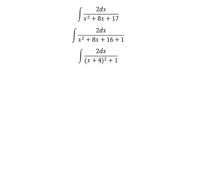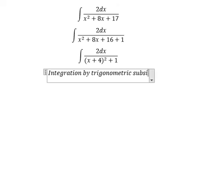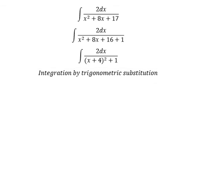Now we can use integration by trigonometric substitution. We put x + 4 equal to tan(t), so dx equals dt over cos²(t).